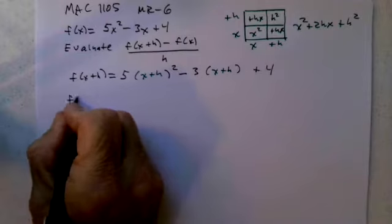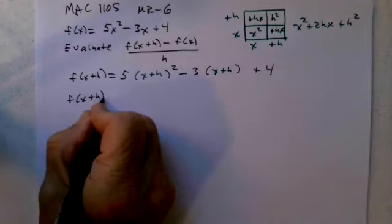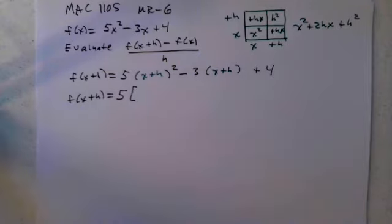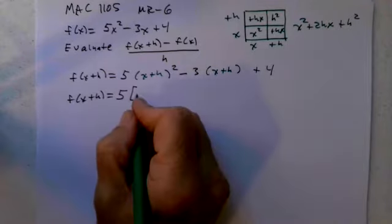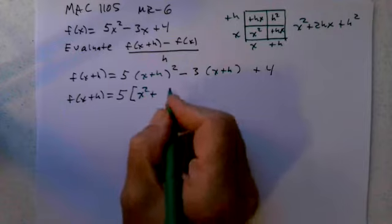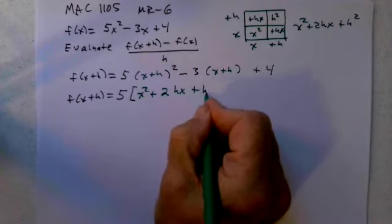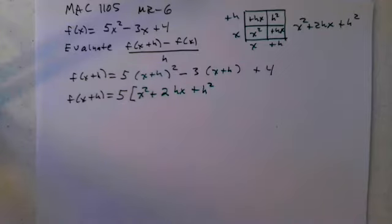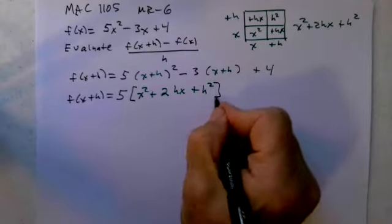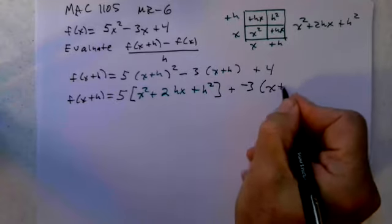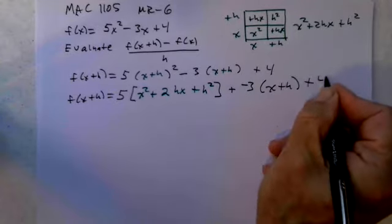Making that substitution. f(x+h) is 5 times all of that: x² plus 2hx plus h² minus 3, I'm going to make plus negative 3, times x plus h plus 4.